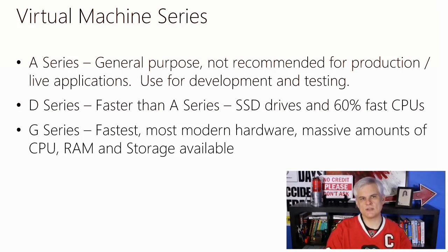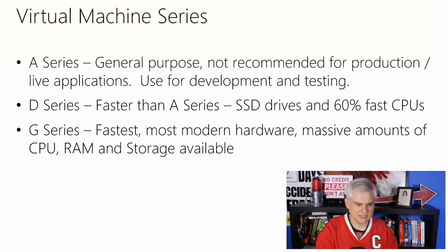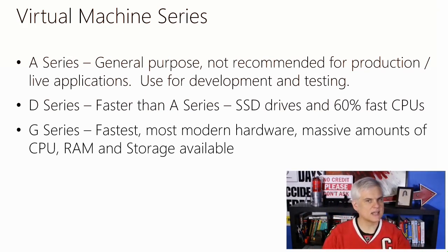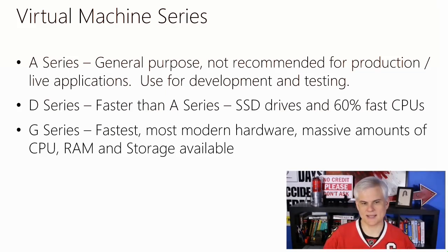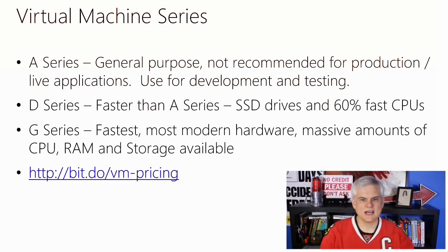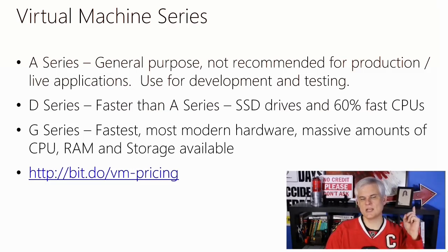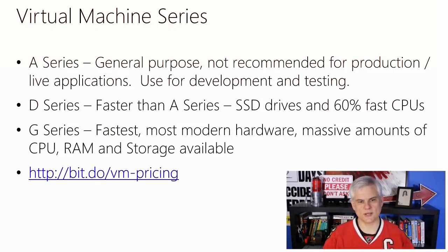The G-series is only available in limited data centers at the time I record this — they're fairly new, but more are coming online. Keep in mind that this information is likely to change on a frequent basis, so you always want to refer to the pricing page. Since we're talking about money, let's also discuss two other items. Even though the pricing page talks about a per-hour charge, you're really only charged on a per-minute basis. So if you only need a virtual machine for 27 minutes, you're only going to pay for the pro-rated version of that hour.